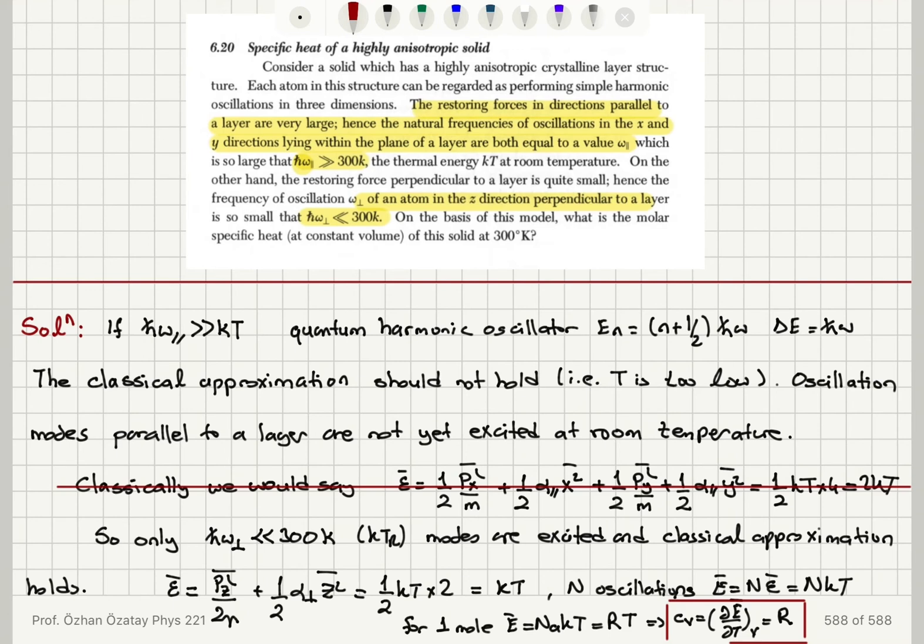Then we have the oscillation modes not excited at room temperature. So this is the case when T equals Tr. So the classical approximation will not hold. We have discrete energy levels as in the quantum harmonic oscillator, and these modes are not yet excited at room temperature, too low energy. Therefore,